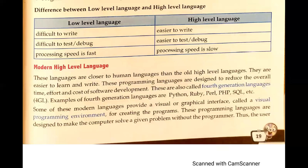Welcome students to your computer session. We are doing chapter number two, which is about computer languages. So far we have discussed machine language, assembly language, and we have seen the major difference between low-level language and high-level language. The language which is very close to the machine, processes very fast, and does not need any major translator is known as the low-level language.